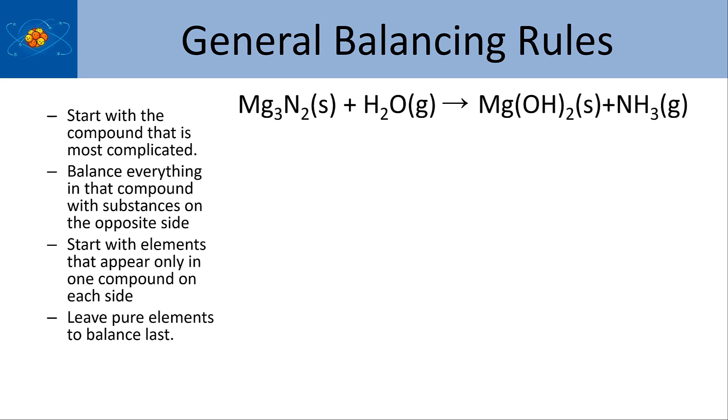And the first rule that I have is find something that looks pretty complicated, that it has the most atoms and maybe the most different kinds of atoms. So this one's kind of hard. It's between magnesium hydroxide over on the right over here and the magnesium nitride. The H2O and the ammonia are pretty simple.